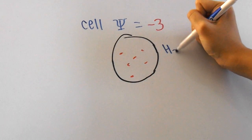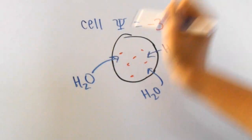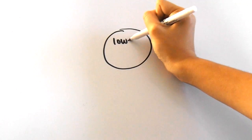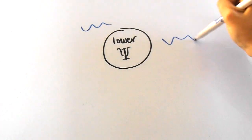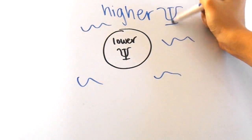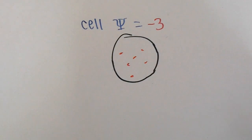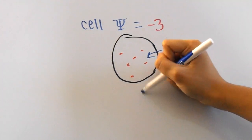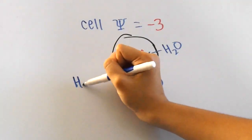Why does solute potential go down when we add solutes? Well that's because we know that water flows from higher to lower water potential. If we add solutes to the cell, it will cause water to flow inside the cell because there is a higher concentration of solutes inside the cell than outside.